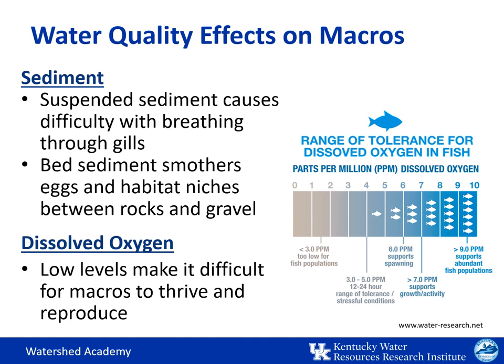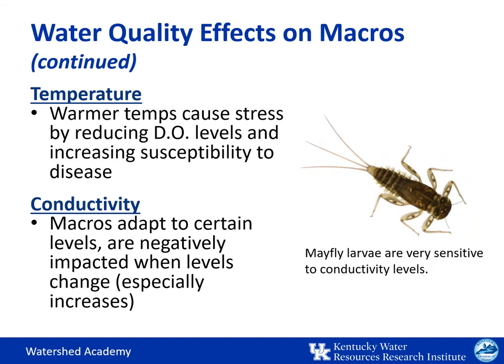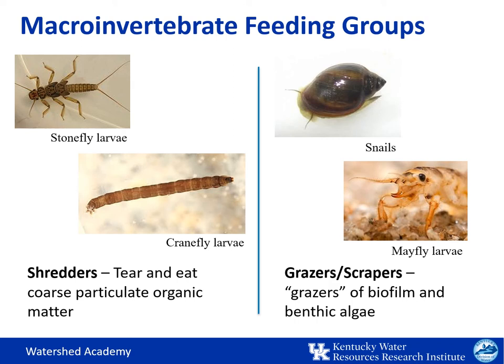What can the macroinvertebrate community tell us about water quality? If suspended sediment is too high, it can cause difficulty breathing through their gills, or if bed sediment smothers their eggs or habitat niches between the rocks and gravel, they won't have a place to live. If dissolved oxygen levels are too low, it makes it difficult for them to thrive and reproduce. Warmer temperatures can cause stress by reducing dissolved oxygen levels and increasing susceptibility to disease. The presence of macroinvertebrates that employ a range of feeding types indicates a healthy aquatic community that maximizes resources and completes the food web.